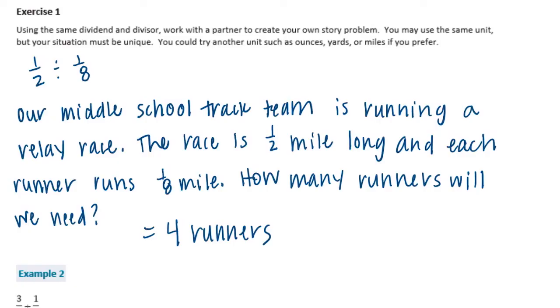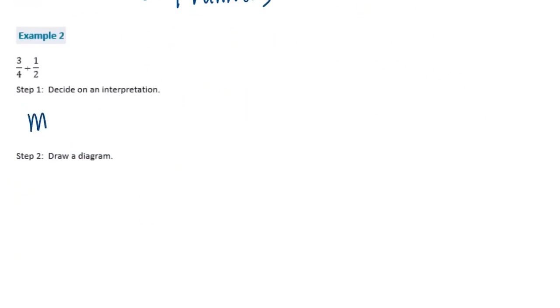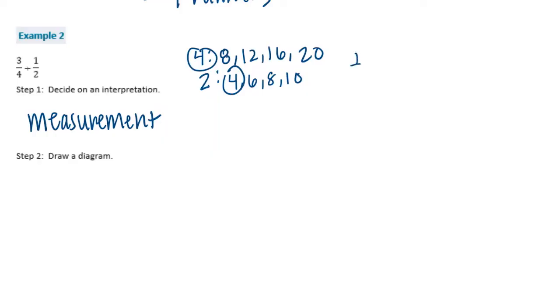Example 2. Step 1, decide on an interpretation. So again, we're sticking with the measurement interpretation. Draw a diagram for 3 fourths divided by 1 half. So first of all, it doesn't have a common denominator. So I'm going to list the multiples for 4 and 2. And we can just use 4. So I can leave 3 fourths alone. And 1 half is equal to, times 2, times 2, 2 fourths. So we have 3 fourths divided by 2 fourths.